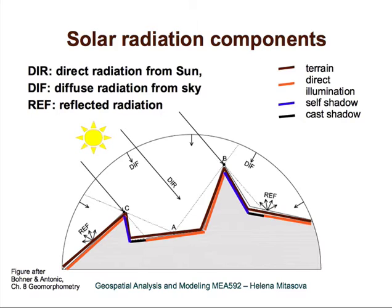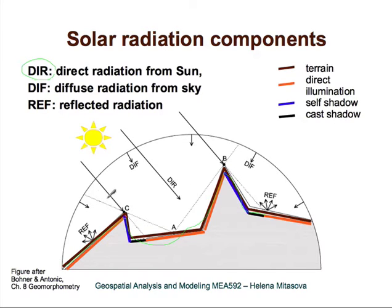Here are the components of solar radiation. The most important component is direct radiation from the Sun, and this direct radiation is the largest component in most places. Here you can see in this image how it is influenced by topography. Topography here is this brown line, and you can see that along this brown line, depending on the position of the Sun, we have certain locations that receive direct solar radiation, such as this one or this one or this one. Then there are locations that don't have any direct solar radiation, and that's due to self-shadow or due to cast shadows.